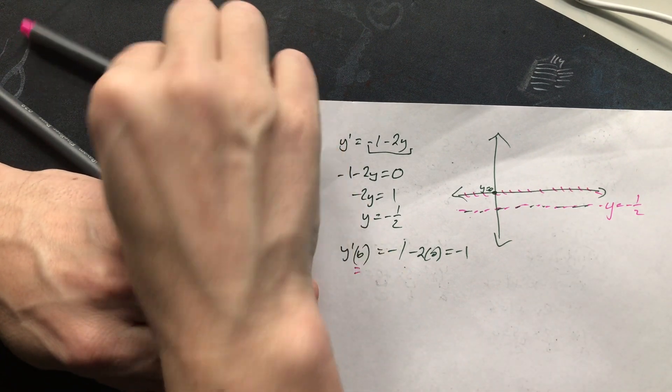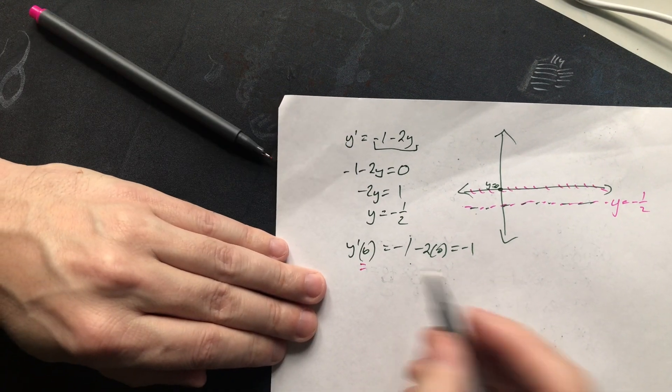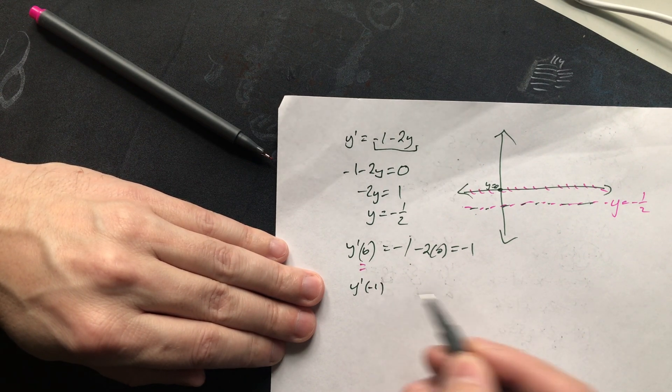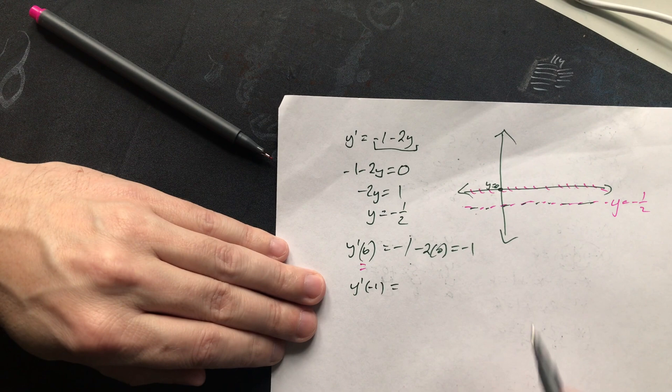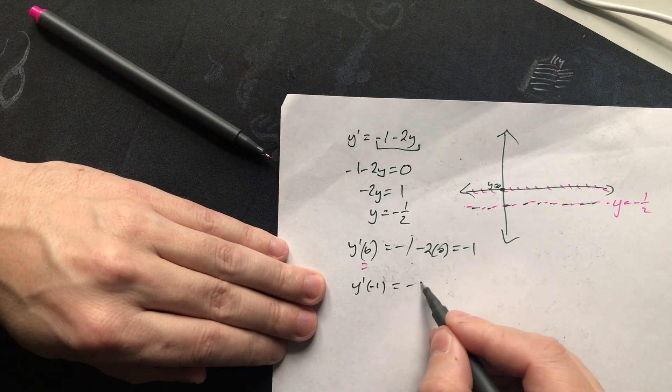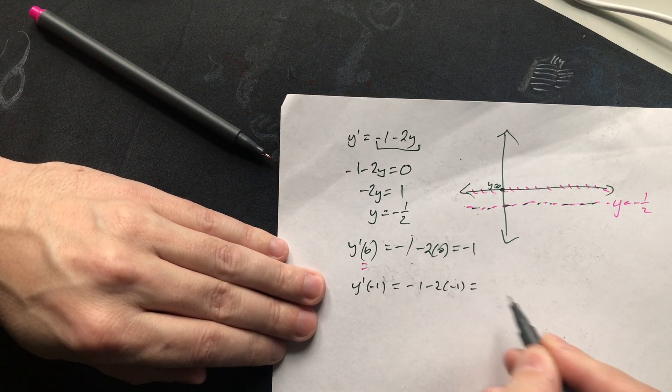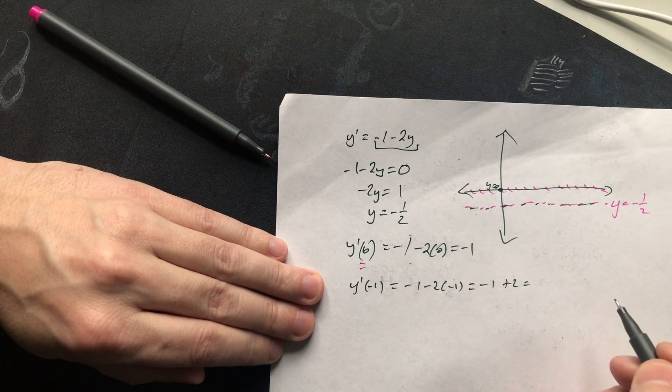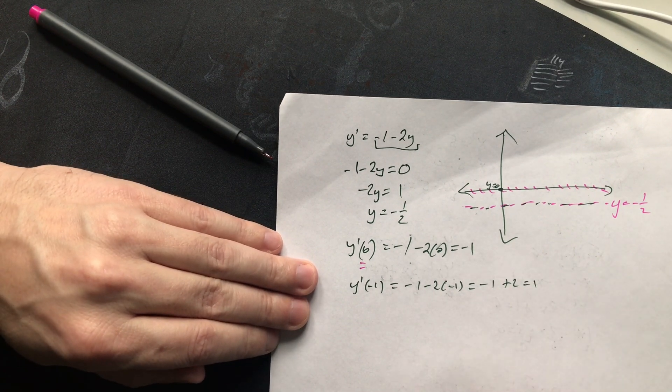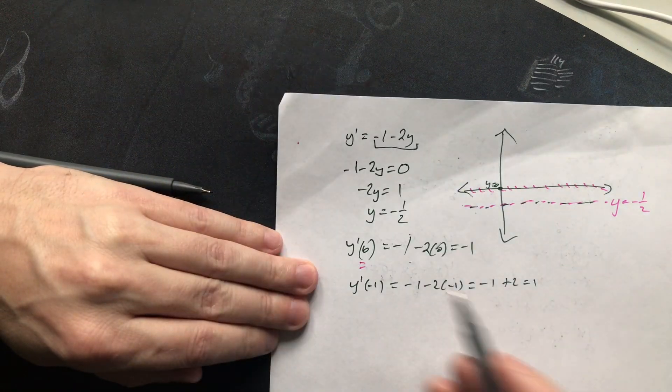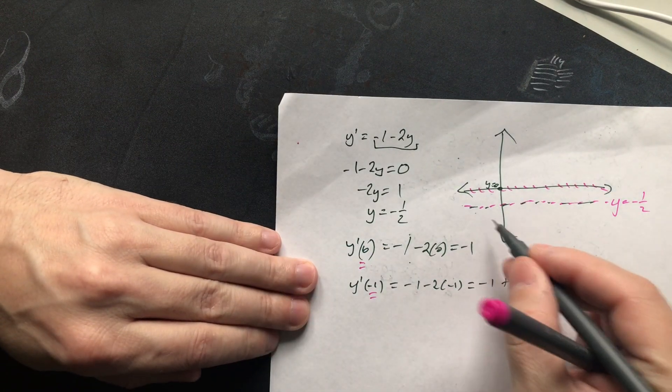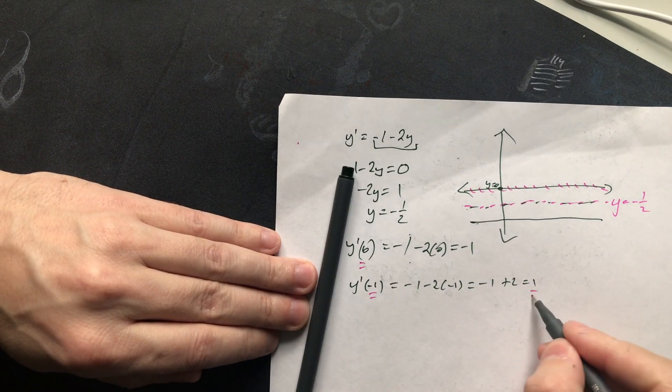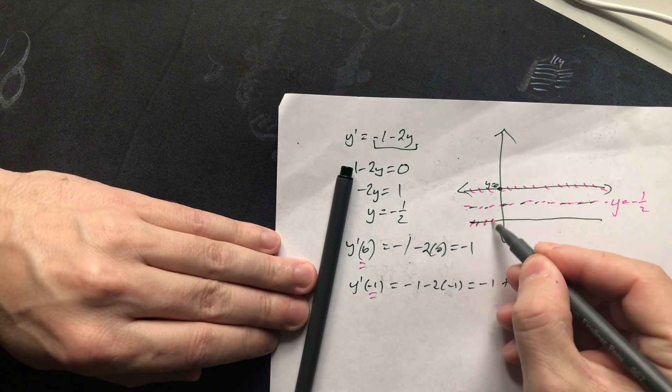Example of y prime of, let's see, make it negative 1, something along those lines. So in that case, you're going to have negative 1 minus 2 times negative 1. Negative 1 plus 2 is going to give us positive 1. So those segments along y equals negative 1, this line right here, and this value of 1 tells you that those slope segments look like this. They have a slope of positive 1.